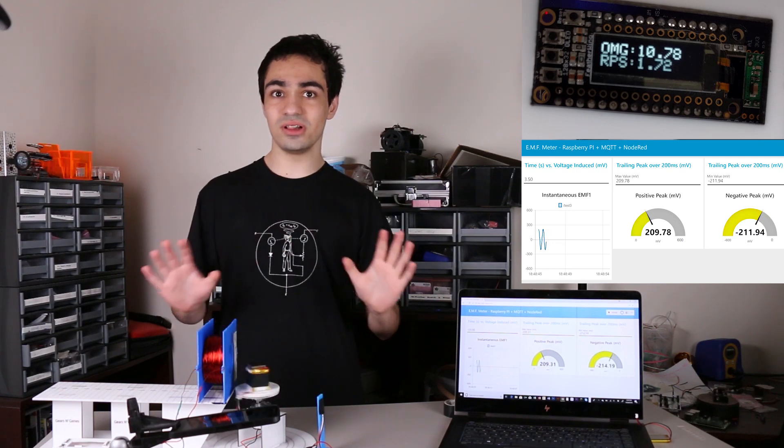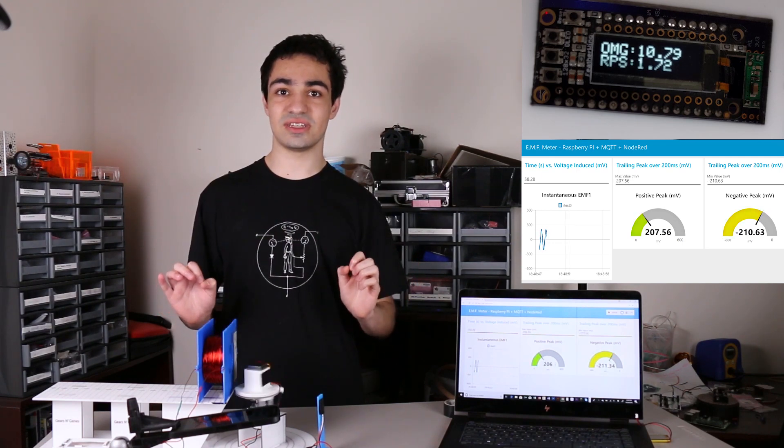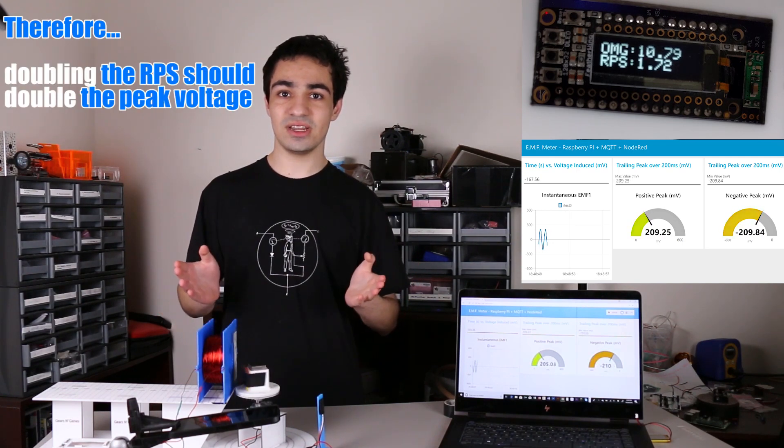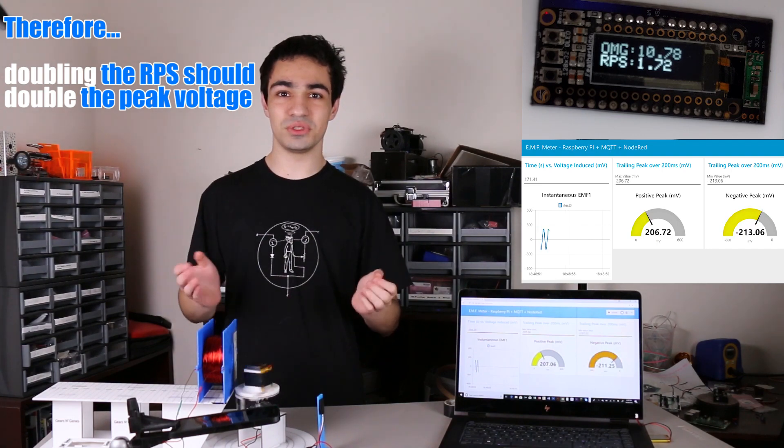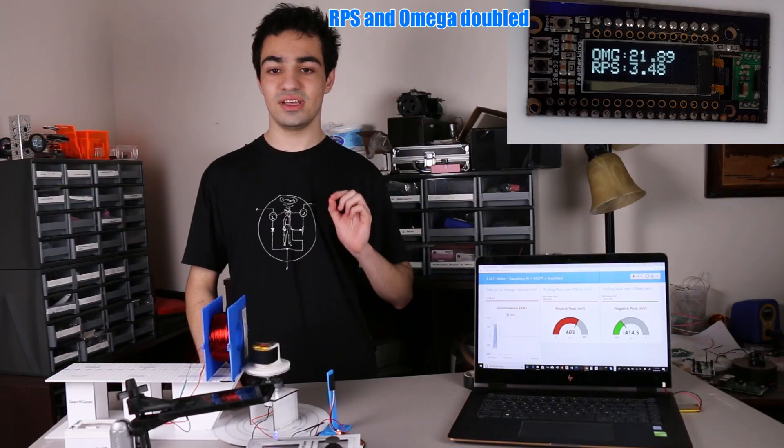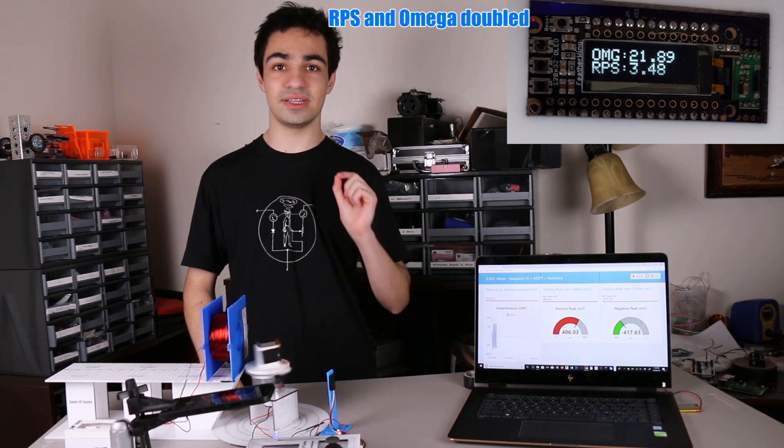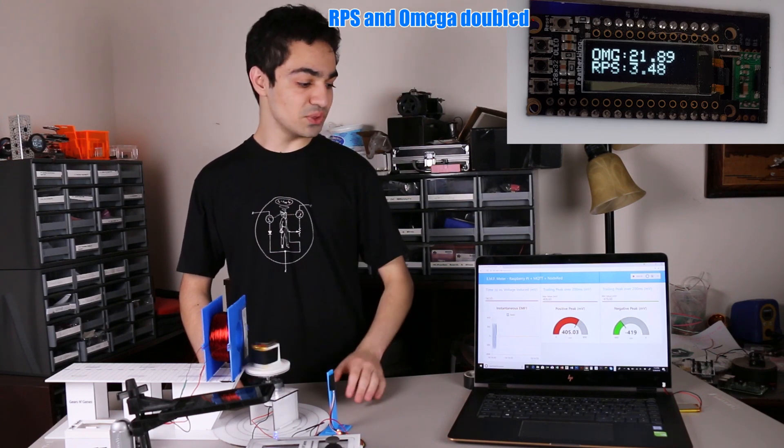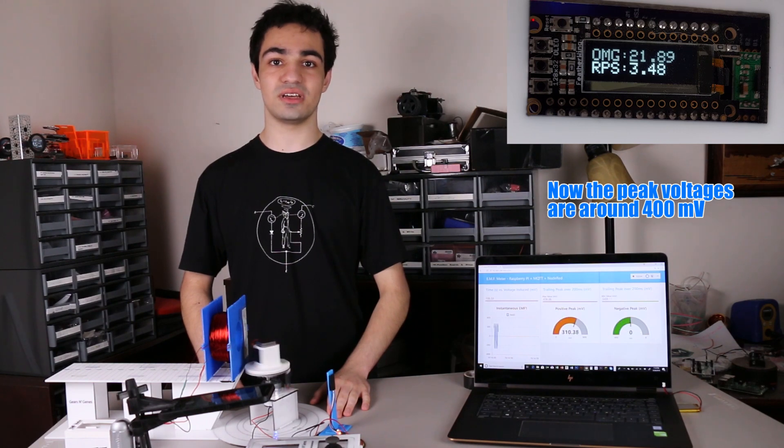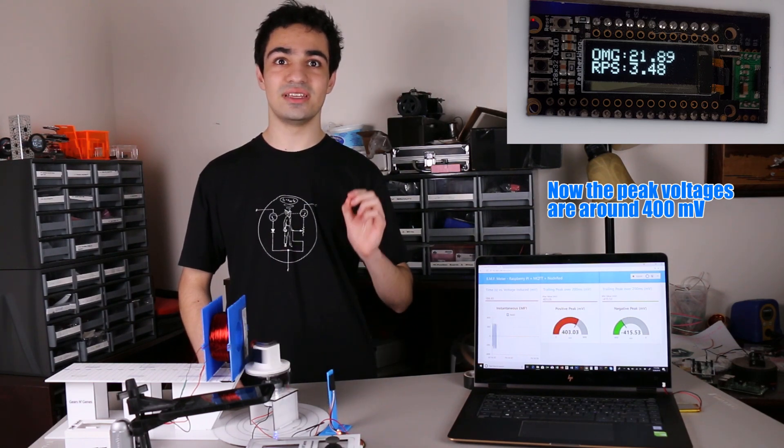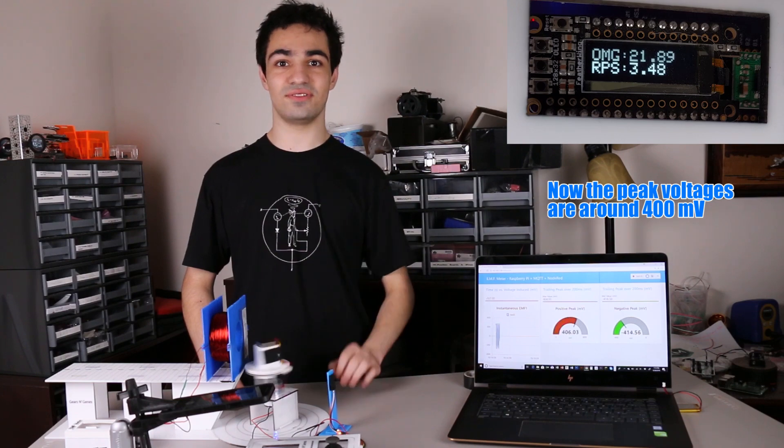So assuming all other factors are constant in this setup, if we double the speed we should also double the peak-to-peak voltages. Now we've doubled the RPS to approximately 3.5 RPS, and when we look at the peak voltages, those have also approximately doubled, supporting that Faraday's law is true on a quantitative level.